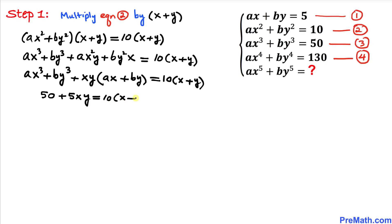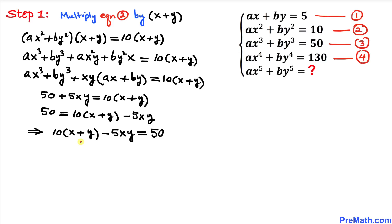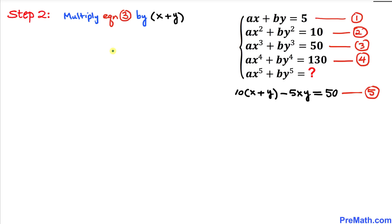Let's move 5xy to the other side, giving us 50 = 10(x + y) − 5xy. We can also write this as 10(x + y) − 5xy = 50. Let's call this equation number 5.